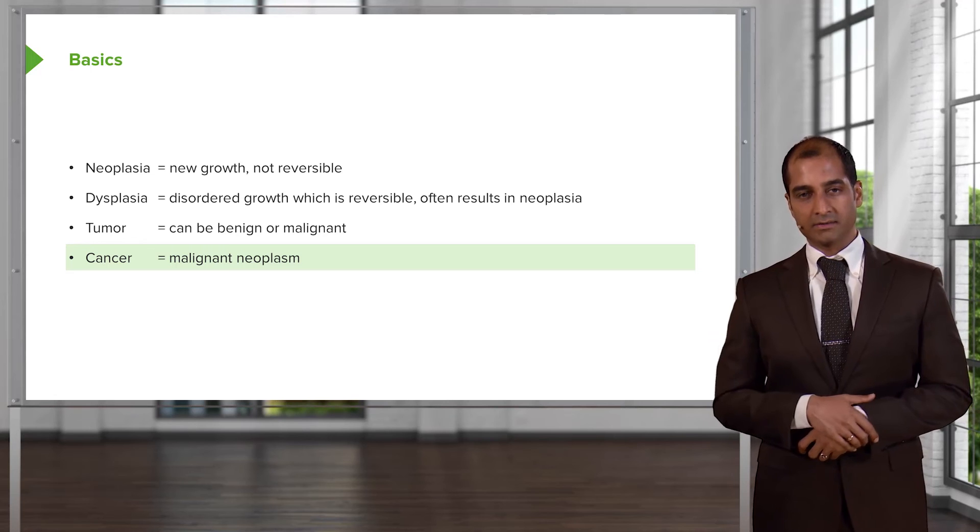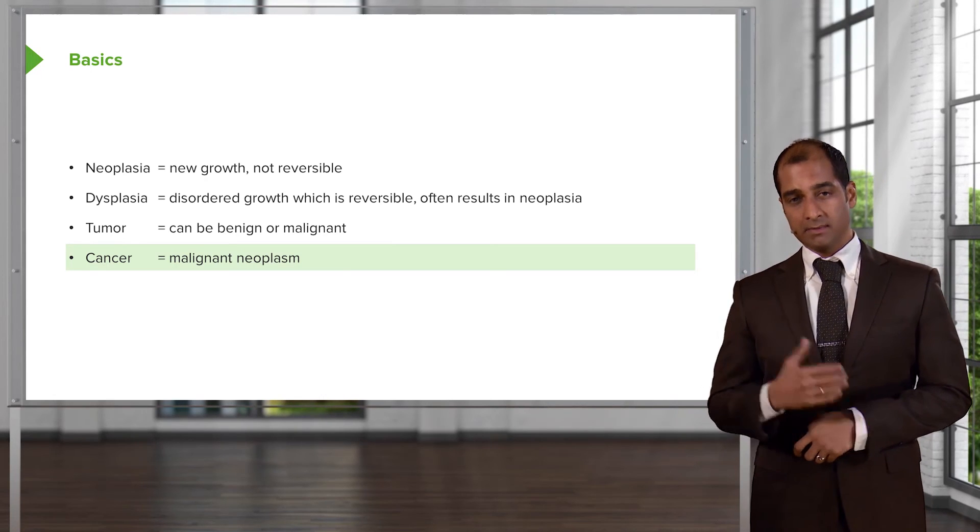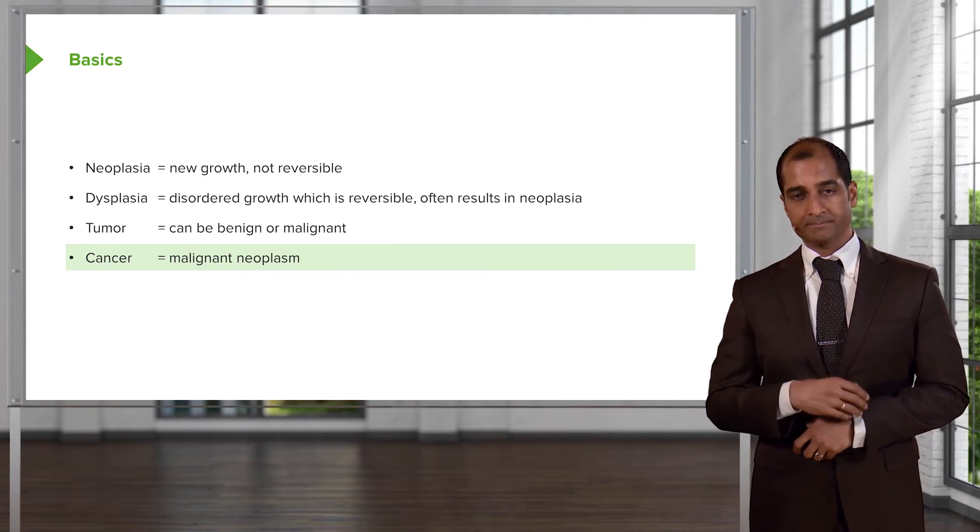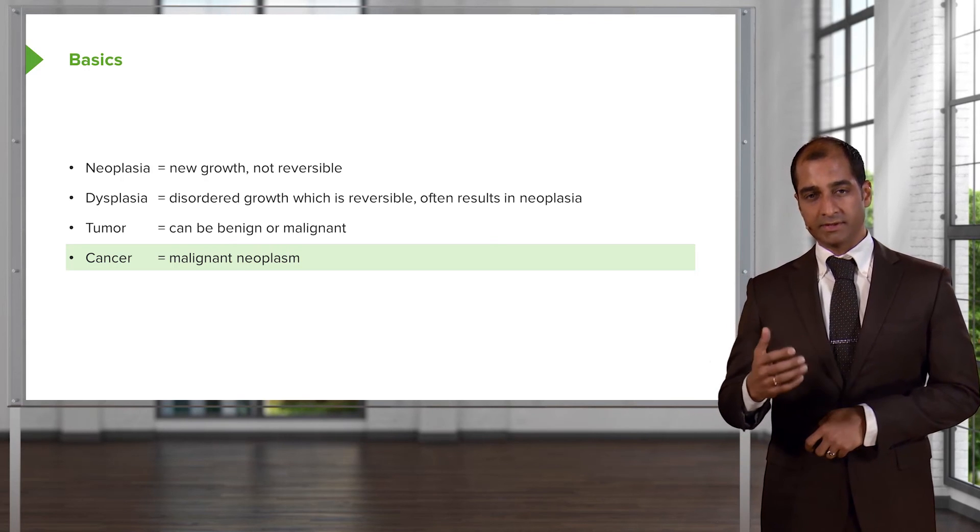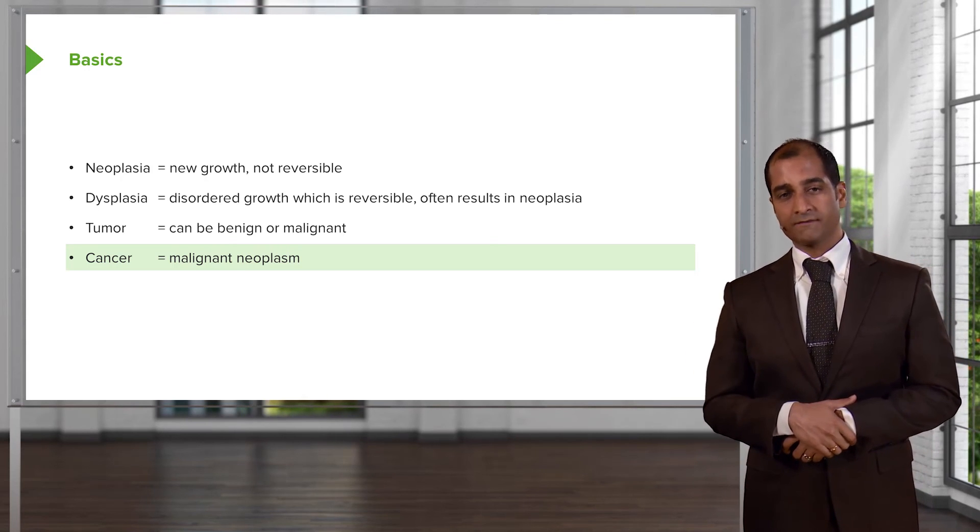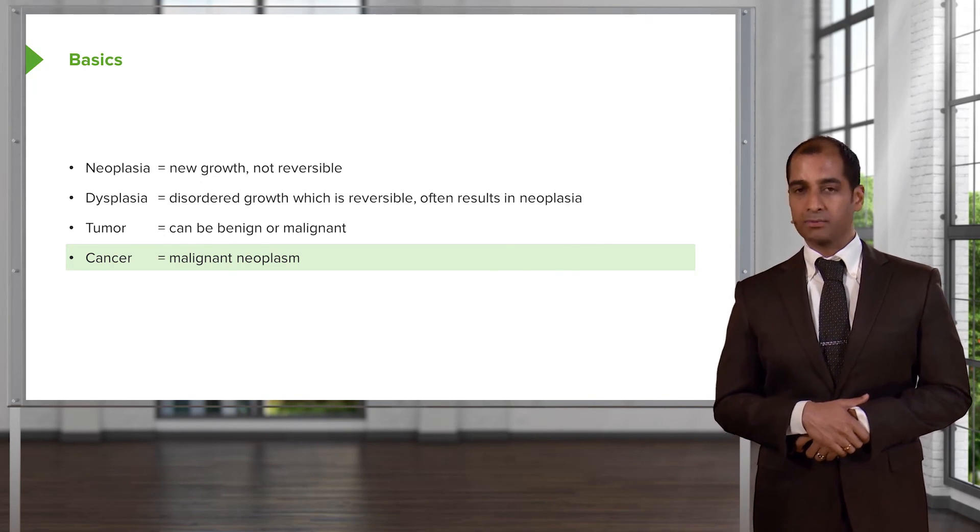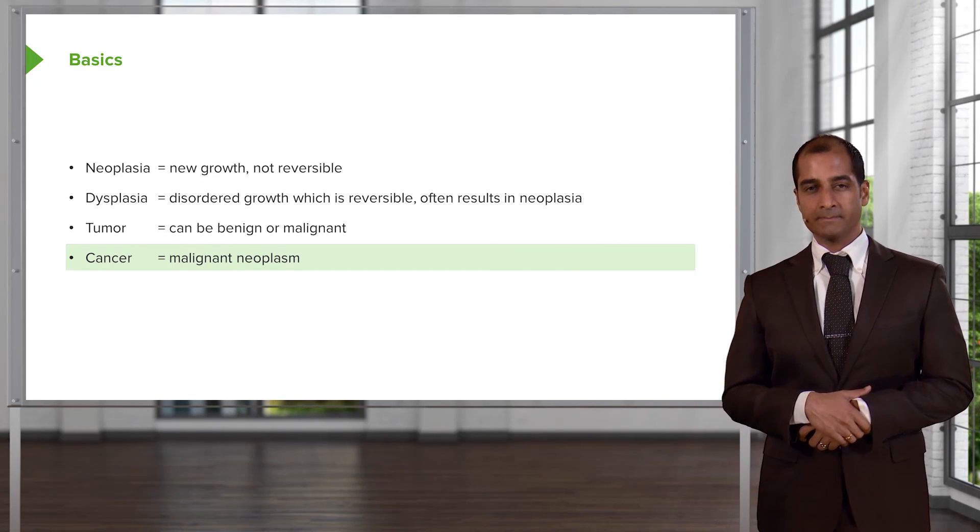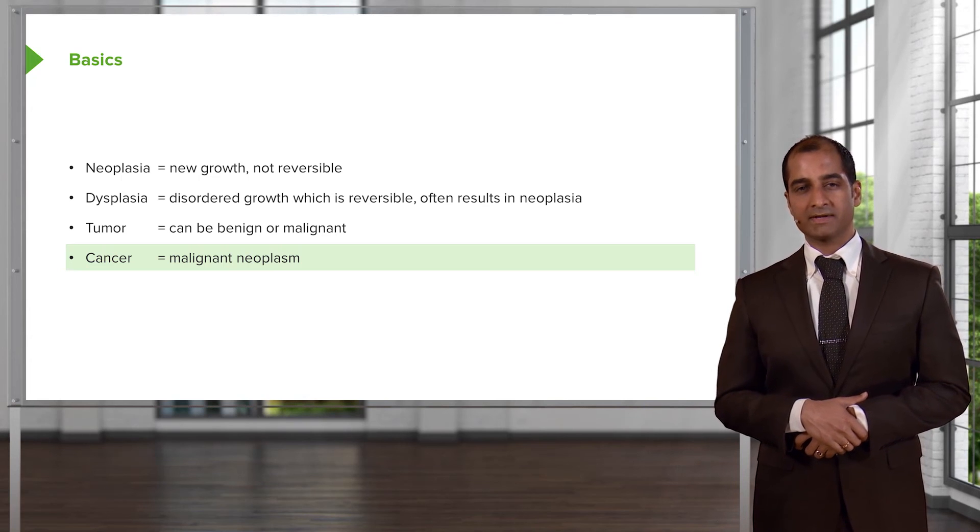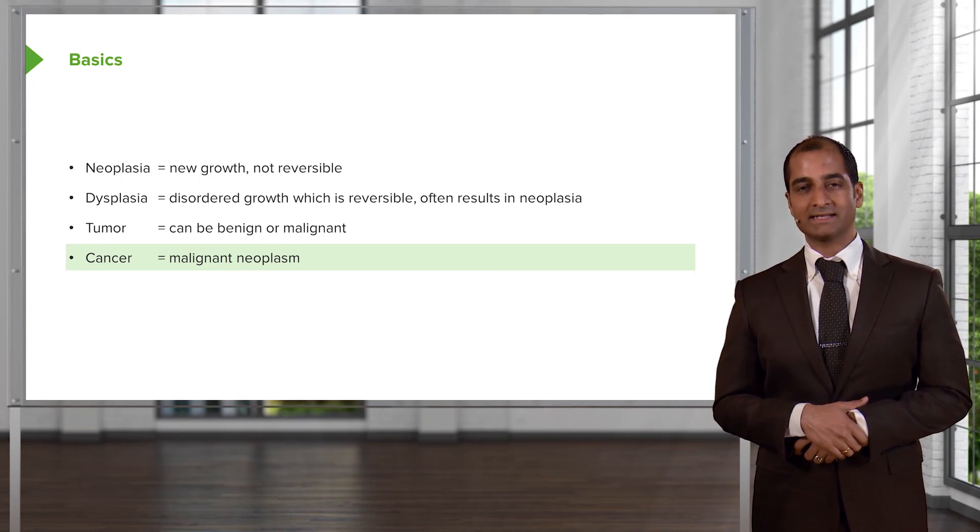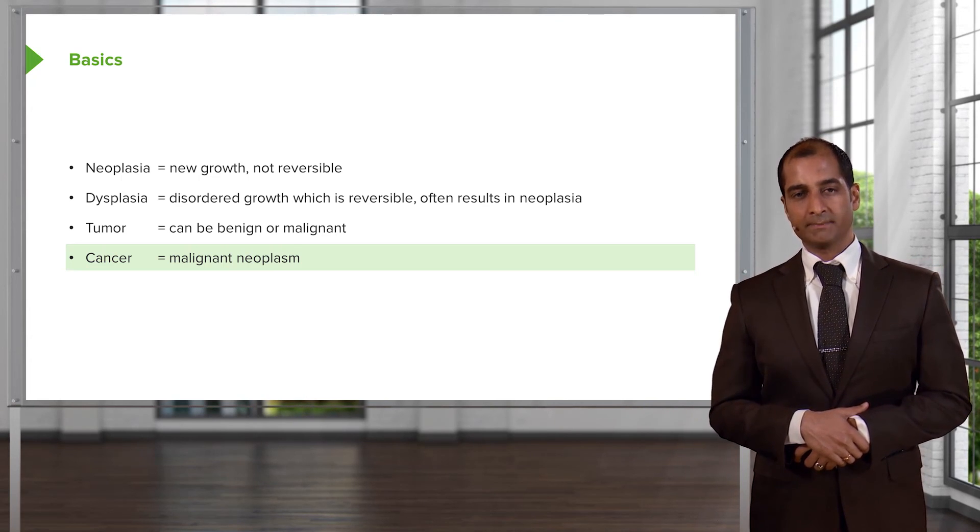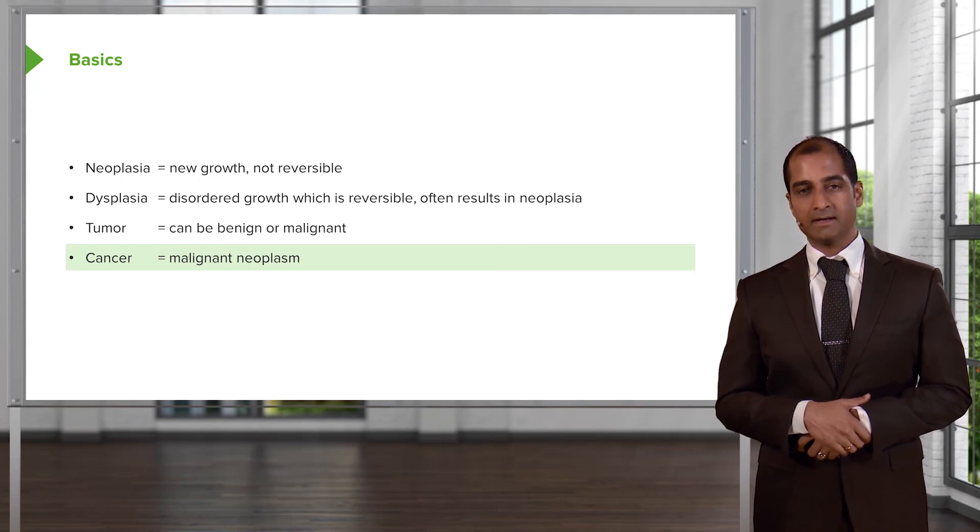And once that happens, then my goodness, you're going to have spread of that cancer. Well, step by step by step. Regional lymph nodes from the regional lymph node might then go on to further lymph node. And then before you know it, there's widespread metastasis. How important is metastasis? If you remember, oftentimes the most common cancer within an organ is not primary. It'd be metastasis from a primary.